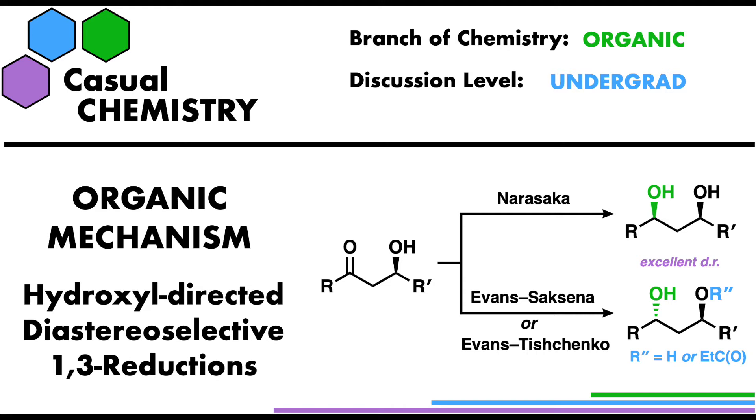Hi everyone. Today I'd like to talk through the mechanism of three different reactions in organic chemistry, all of which use a hydroxyl group in the beta position to a ketone to do a diastereoselective reduction. That means we can form 1-3 diols in very high diastereoselectivity. These transformations can be really useful in complex molecule synthesis, particularly those with loads of stereochemistry such as polyketides, and these transformations are often post-reaction modifications after an aldol reaction.